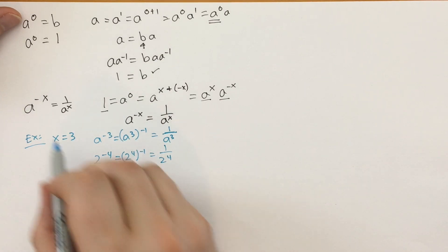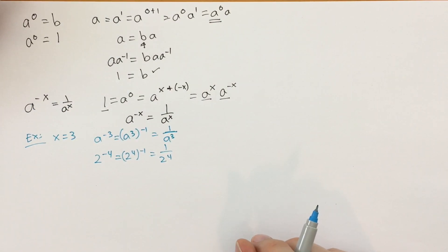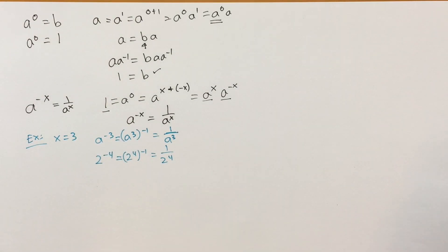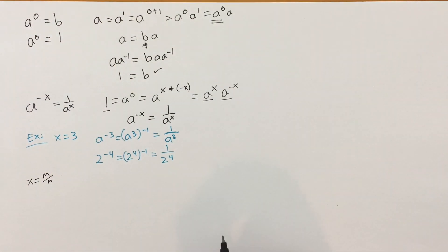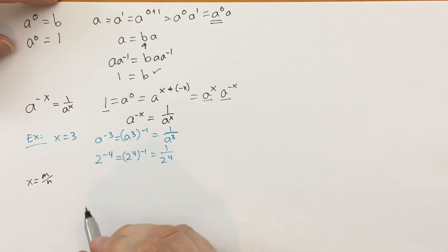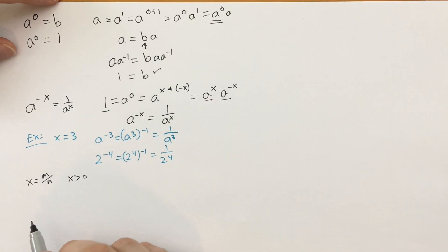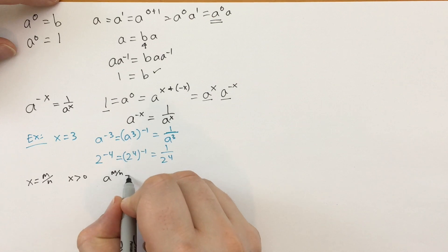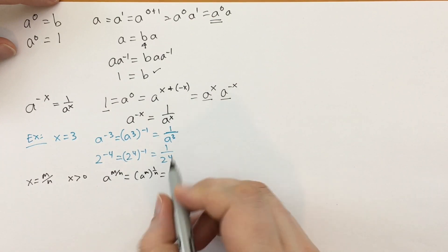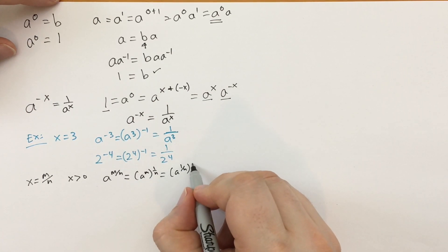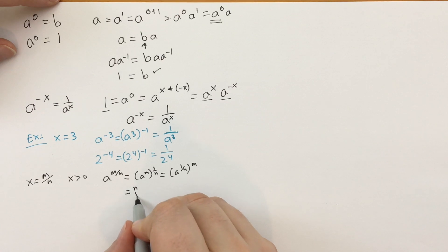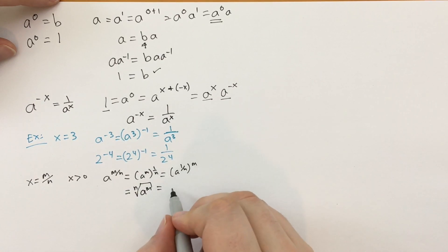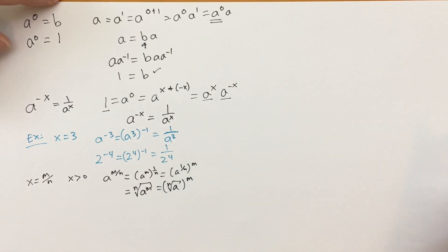What if x equals a rational number m over n, where m and n are positive integers in lowest form? Then a to the m over n equals a to the m to the one over n, which also equals a to the one over n to the m. We can write this as the nth root of a to the m, or the nth root of a, all to the mth power. Both are the same — worth memorizing.